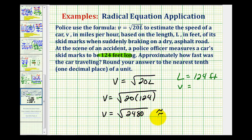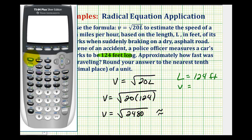And now we'll use the calculator to get a decimal approximation. So we'll type 2nd X squared, 2480, close parenthesis, enter. So the speed is approximately 49.8 miles per hour.